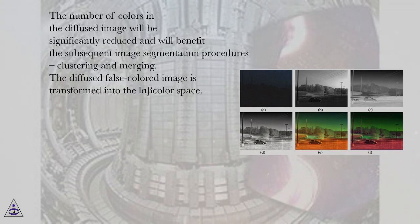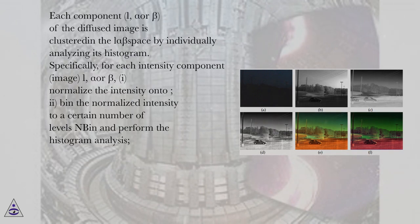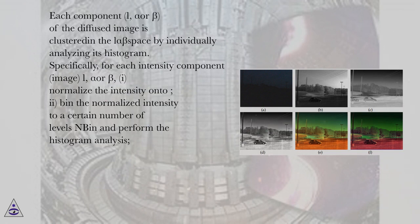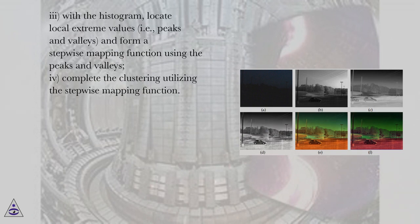The diffused false-colored image is transformed into the L-alpha-beta color space. Each component — L, alpha, or beta — of the diffused image is clustered in the L-alpha-beta space by individually analyzing its histogram. Specifically, for each intensity component image (L, alpha, or beta): (1) normalize the intensity; (2) bin the normalized intensity to a certain number of levels and perform histogram analysis; (3) with the histogram, locate local extreme values, i.e., peaks and valleys, and form a stepwise mapping function using those peaks and valleys; (4) complete the clustering utilizing the stepwise mapping function.